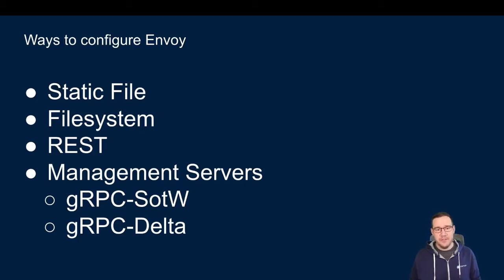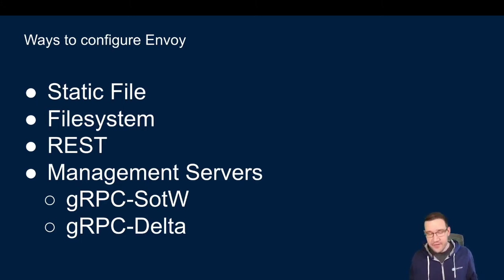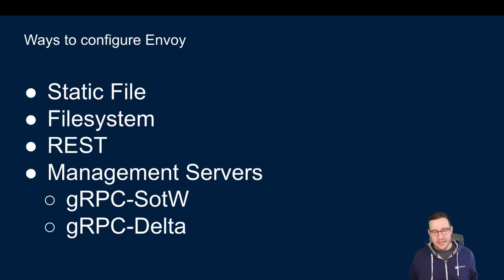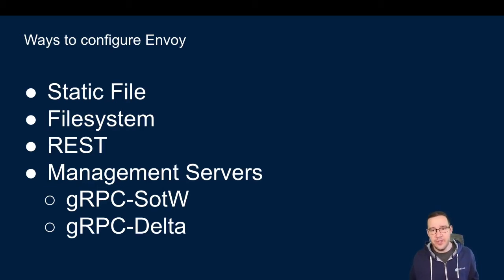There are two ways to implement these management servers: State of the World and Delta. State of the World means if I have nine clusters and add a tenth, the management server passes down all ten clusters to Envoy and says, here's the state of the world, this is all the clusters I know about. Delta works differently — instead of sending all ten clusters, it sends just the one cluster that was added or deleted. If a cluster was deleted in State of the World, we'd send eight clusters down and Envoy would detect the missing one and remove it from configuration.